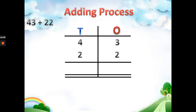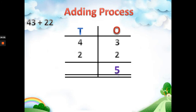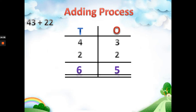In the adding process, always start by adding the ones place first. Three plus two equals five. After that, go to the tens place and add: 4 plus 2 equals 6. So our answer is 65.